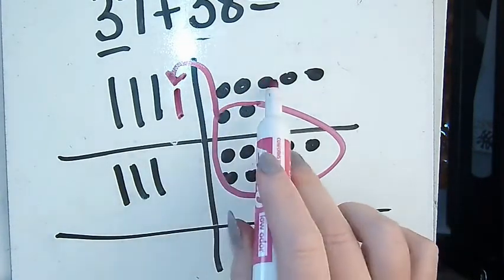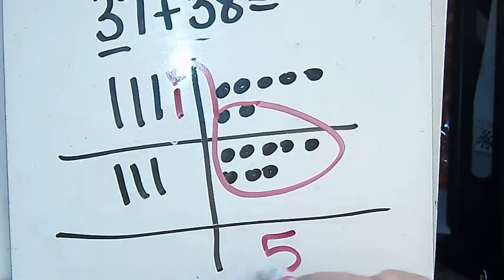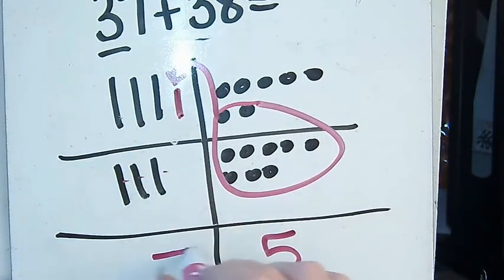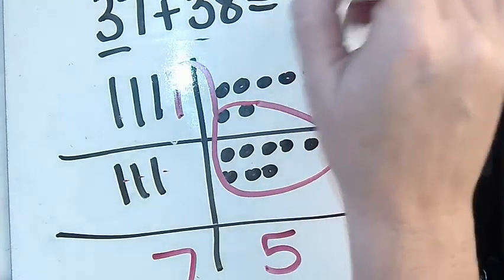Now I have one, two, three, four, five ones left and one, two, three, four, five, six, seven tens. So my answer is 75.